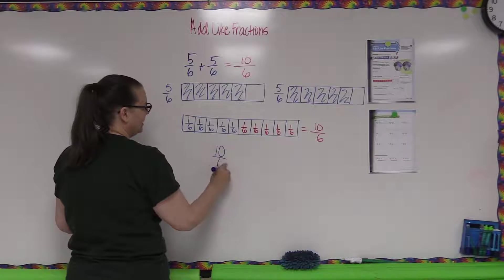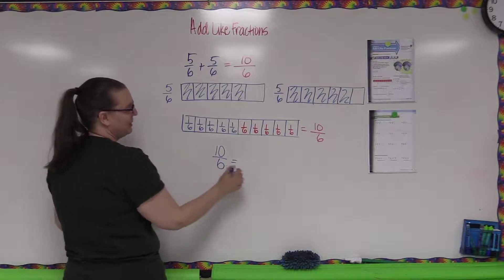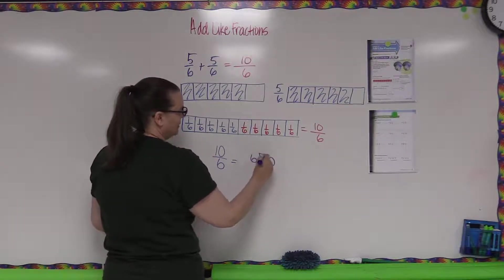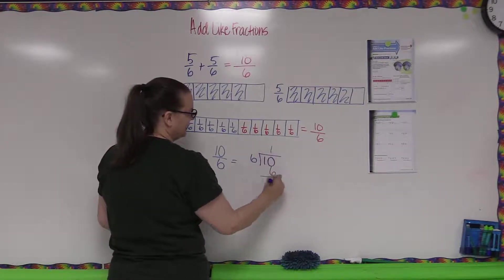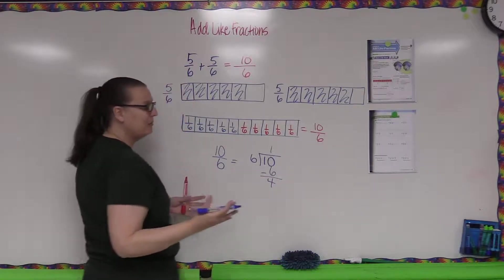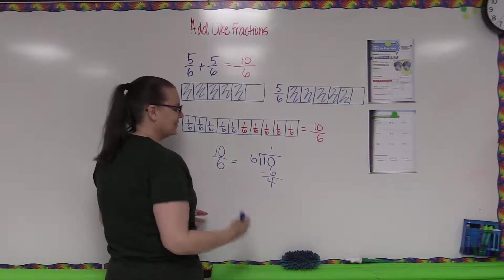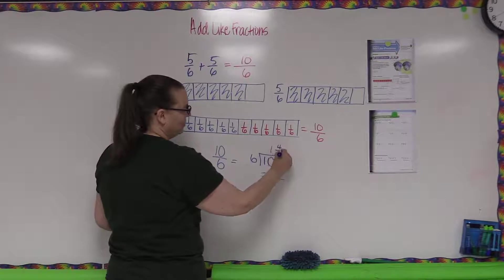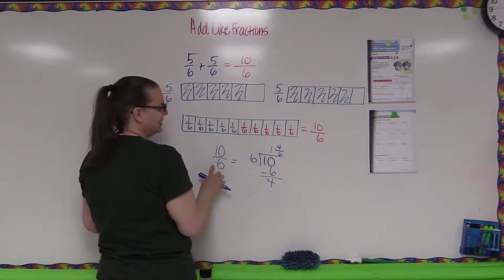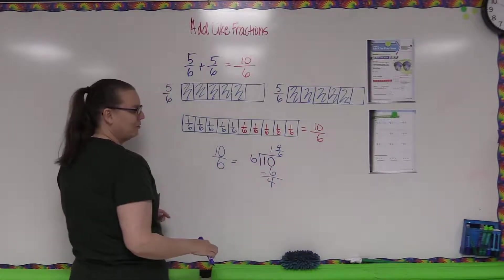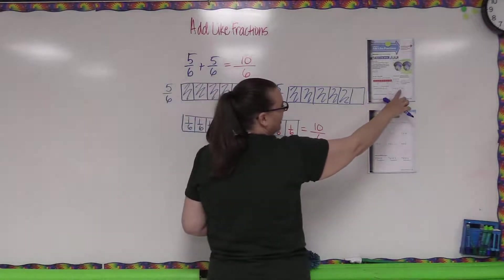Now we're left with an improper fraction. To convert it to a mixed number, think of it as ten divided by six. How many times does six fit into ten? One time — six times one is six. Subtract to get a remainder of four. With fractions, the remainder becomes the numerator and the divisor is the denominator. So ten-sixths as a mixed number is one and four-sixths.